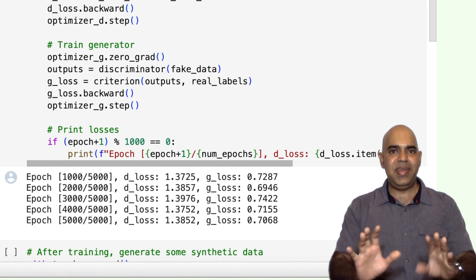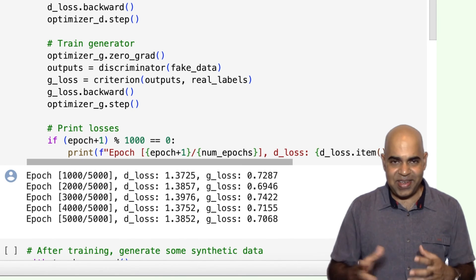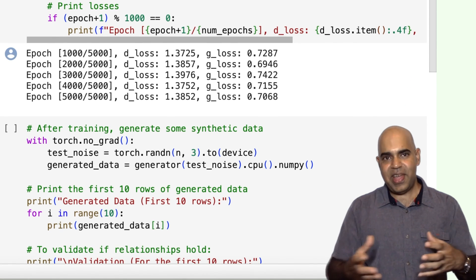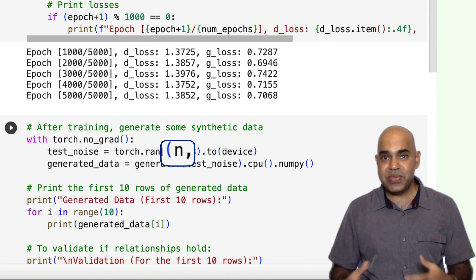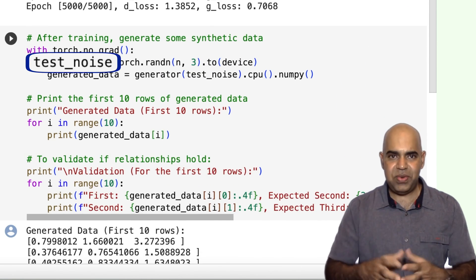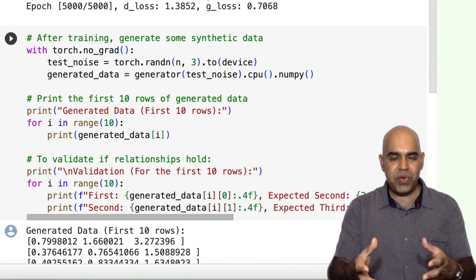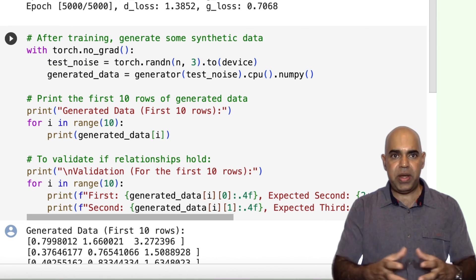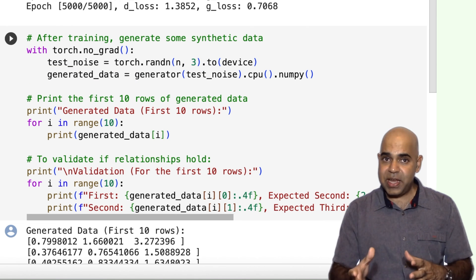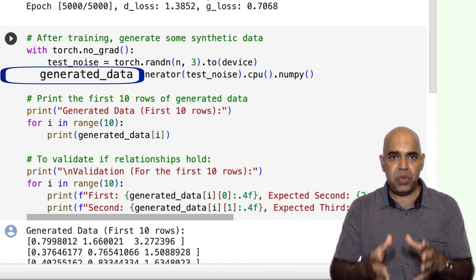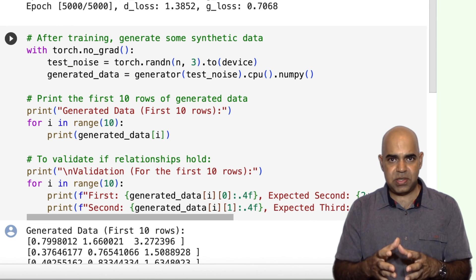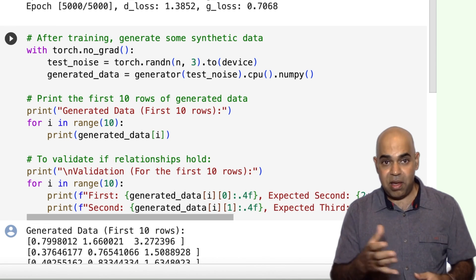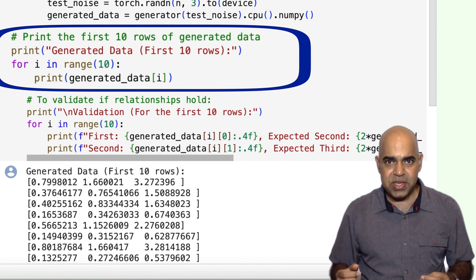The training is done. It is now the time to generate some fake data from random noise. Here, I have random noise of 1,000 rows and 3 columns. I give it to the trained generator. The generator gives me back 1,000 rows each with 3 features. If the generator training worked correctly, then the second column of the generated data should be almost twice as the first. And the third column should be twice the second. Let us see. I am printing the first 10 rows here.